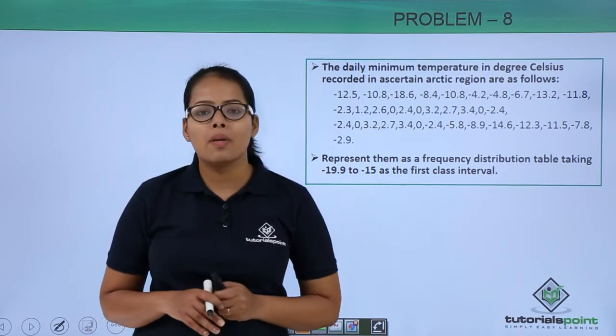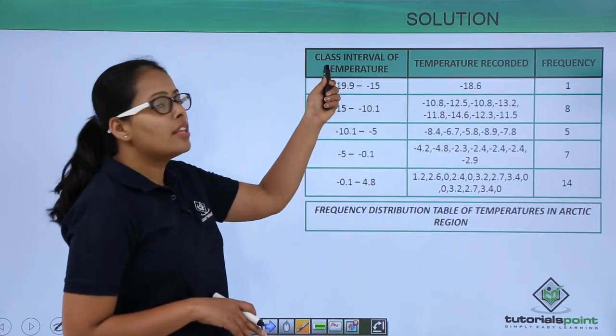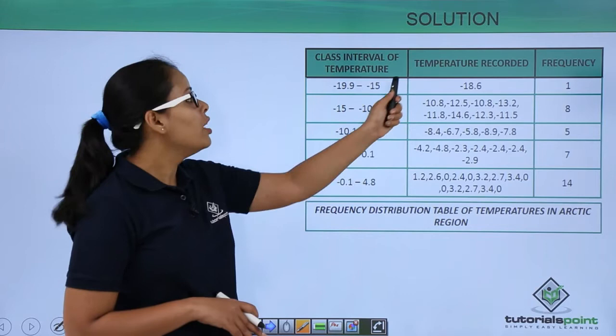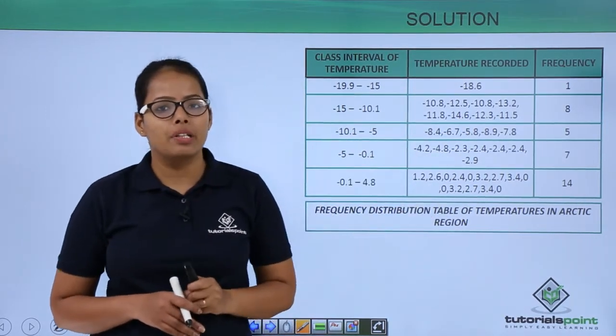So now let's represent the data. In this table, our first column is for the class interval of temperature, the temperatures recorded in these intervals, and the frequency related to those intervals.